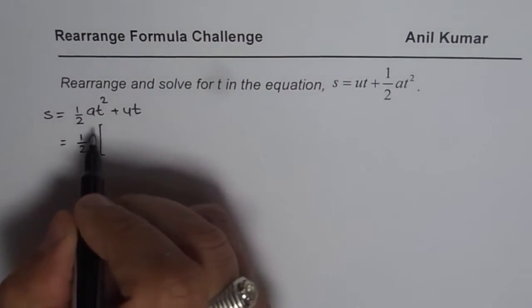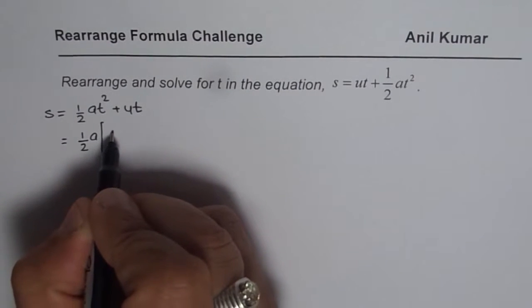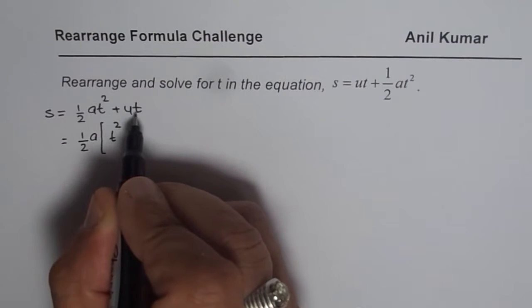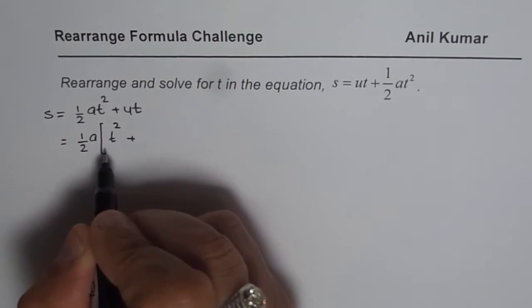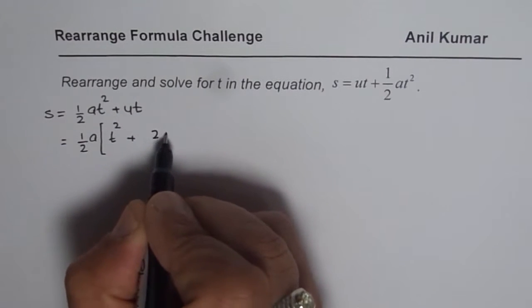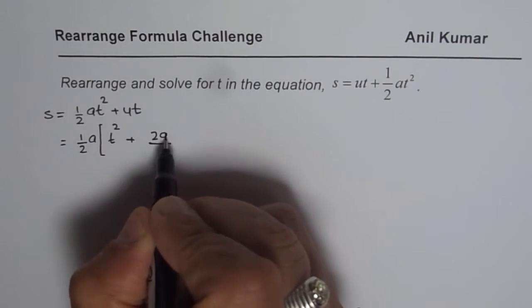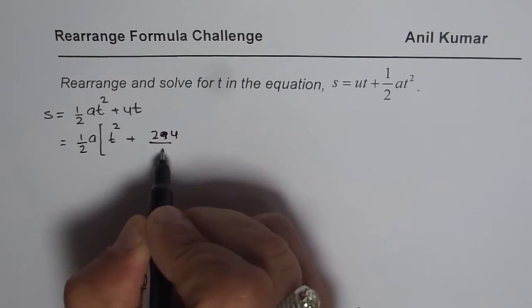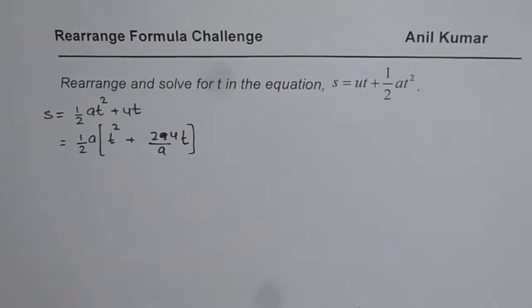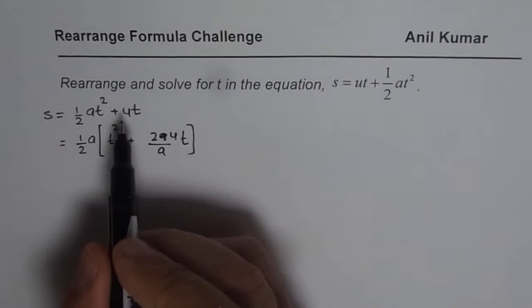So when I take half of a common, I get t square as the first term and the next term will be u times t multiplied by 2 and divided by a. So I could write this as 2u over a times t. Because we do not have half a term here. To create half a here, we have to multiply and divide by this term. So one term we have taken outside, which is half a. So when you factor this out, you get 2 times and then divide by a.